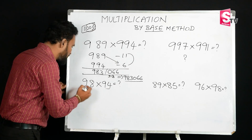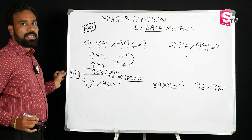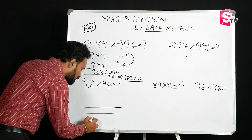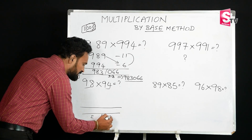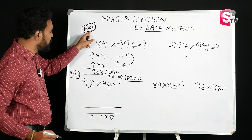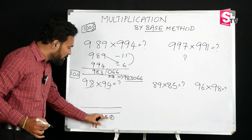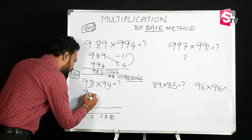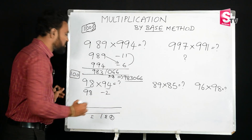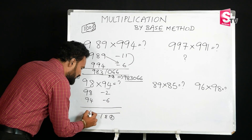For 98 times 94, both numbers are close to 100, so we fix the base as 100. The answer is in two parts. Since the base 100 has two zeros, the second part will have two digits. The deficiency of 98 from 100 is 2, and the deficiency of 94 from 100 is 6.